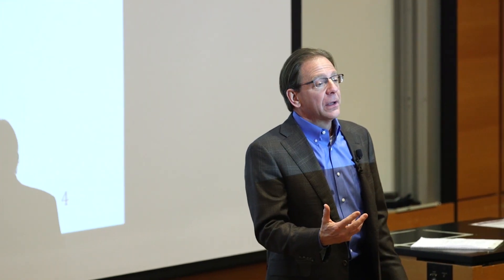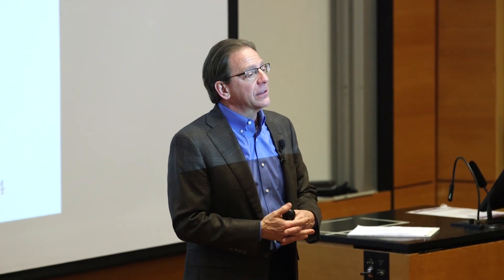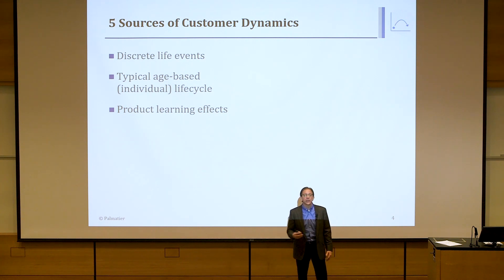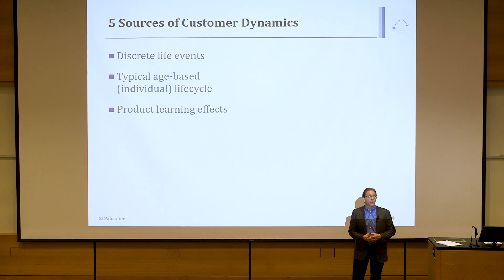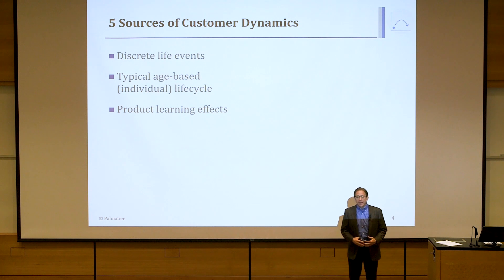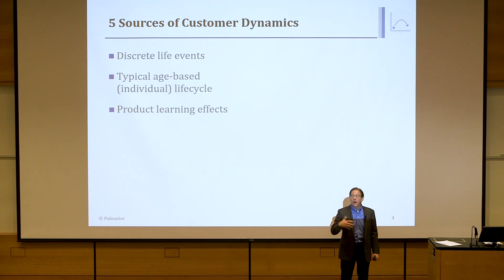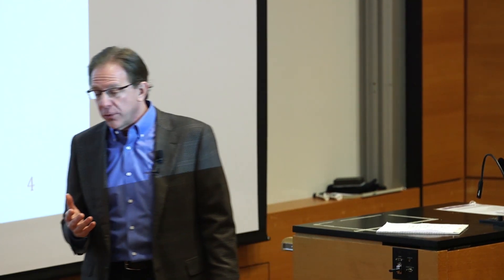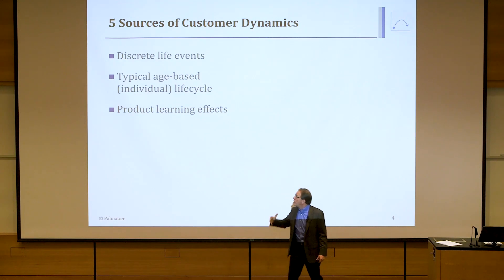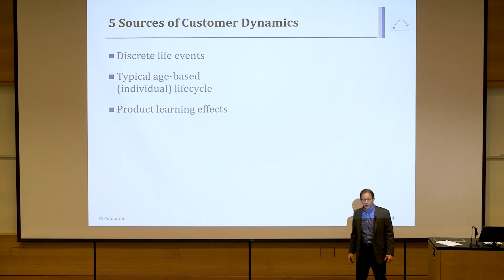The third source is product learning effects. No matter what discrete events are happening or what age you are, when you first start with a product, you have to learn about it. For example, if you're just getting into long-distance bicycling, in the beginning you don't know much — you buy a lower-end bike. But as you get more knowledgeable, there might be other characteristics you weren't interested in the first time, and you want to upgrade. It's well known that as you learn more about wine, you start buying more expensive wines. Those are product learning effects.